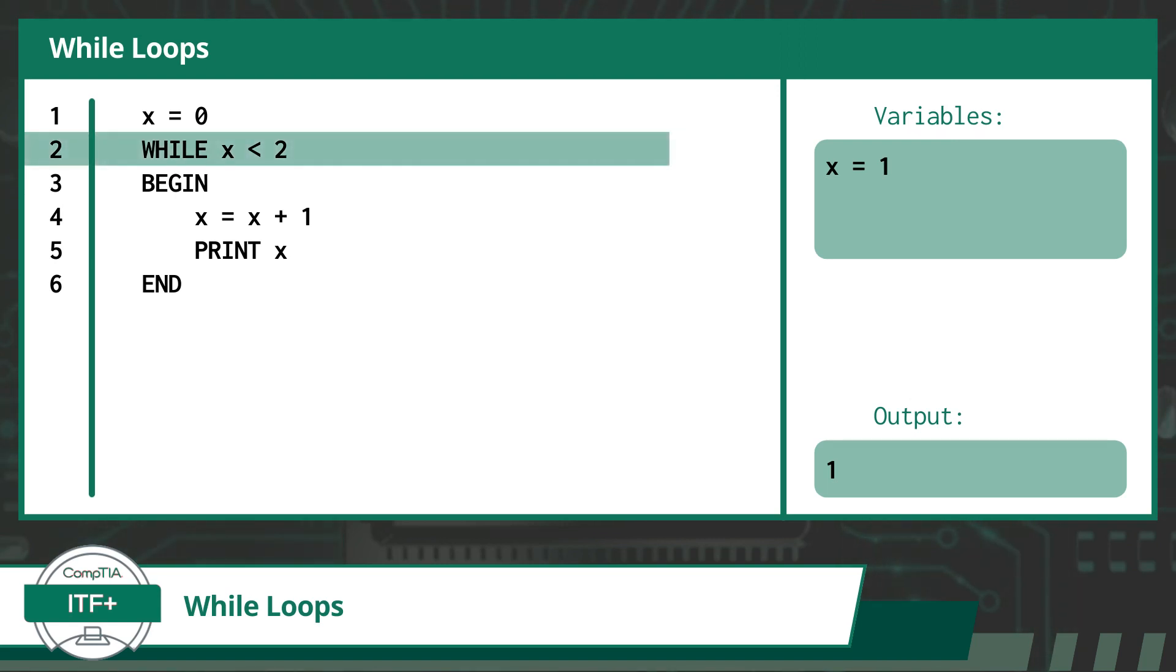This time we perform a re-evaluation and check if x is still less than 2. Since the value of the variable x, which is currently 1, is less than 2, we will execute the code statements within the loop again. Next, we see the word begin, this opens our looped code. We reassign x with the current value of x plus 1, making 2 the new value. We print out the value of x, which is currently 2, and append it to the previous output of 1. Next, we see the word end, this closes our looped code.